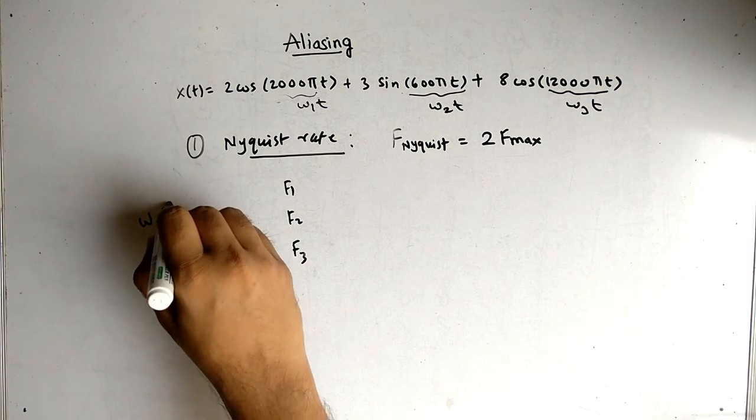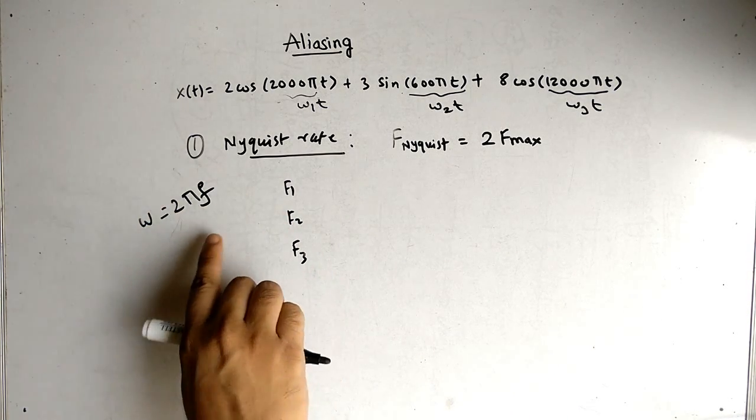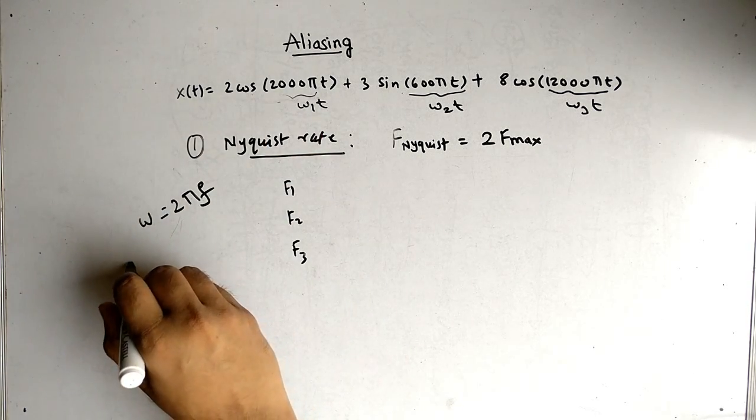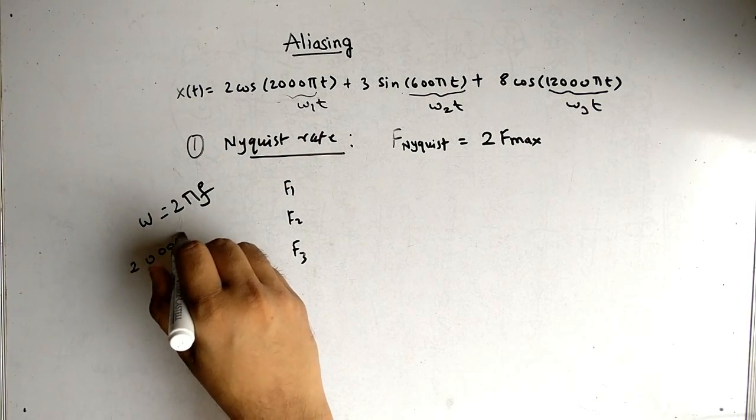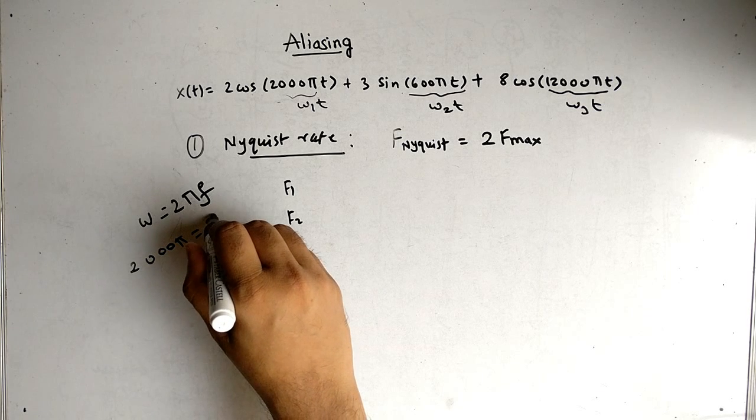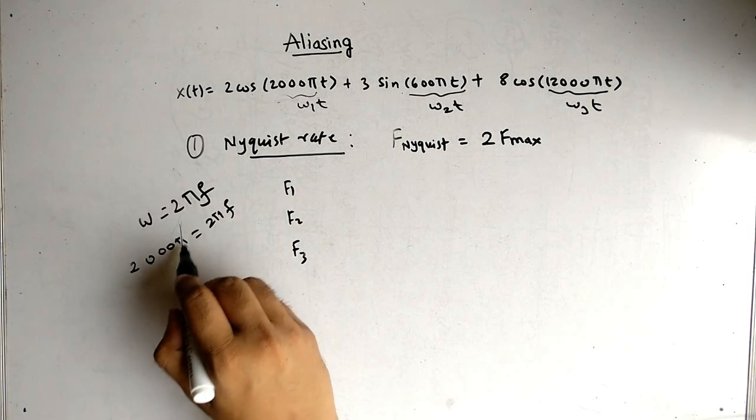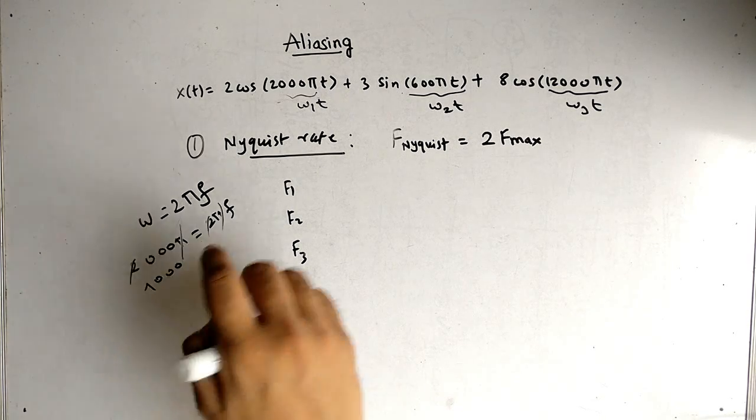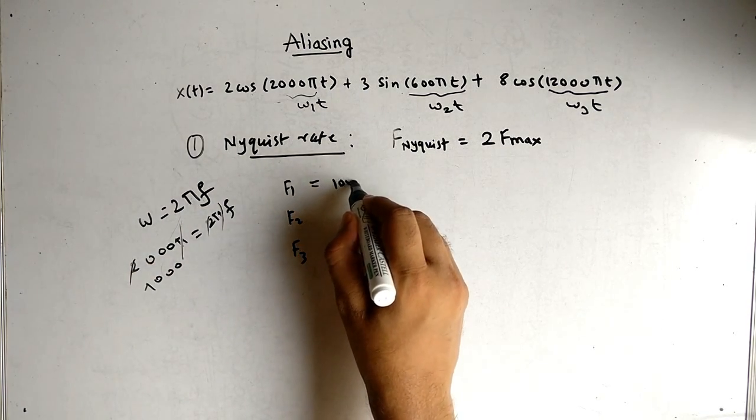Now omega is 2 pi f, so using that we can find frequency. For the first term, 2000 pi is equal to 2 pi f. You can see that pi cancels, 2 cancels, giving us 1000. So the frequency of the first is 1000 hertz.